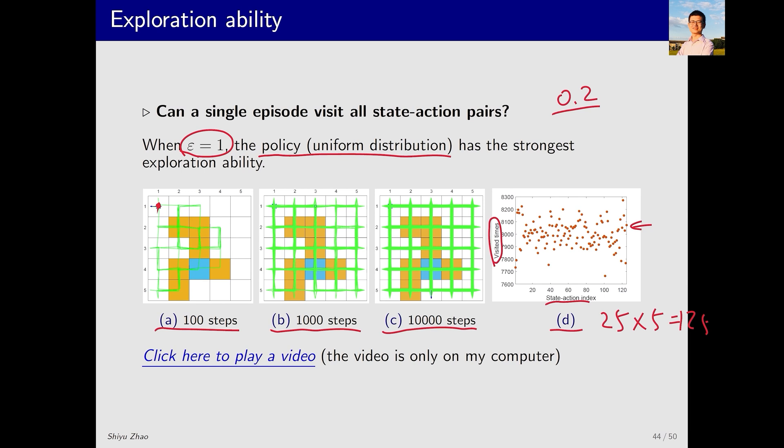This illustrates the thorough exploration achieved even with just one episode. This example clearly demonstrates that when epsilon is large, exploration is strong, making exploring starts unnecessary. Therefore, instead of starting from every S-A, we can visit all S-A by starting from only one. Let's further enhance our understanding with a video demonstration of this process.